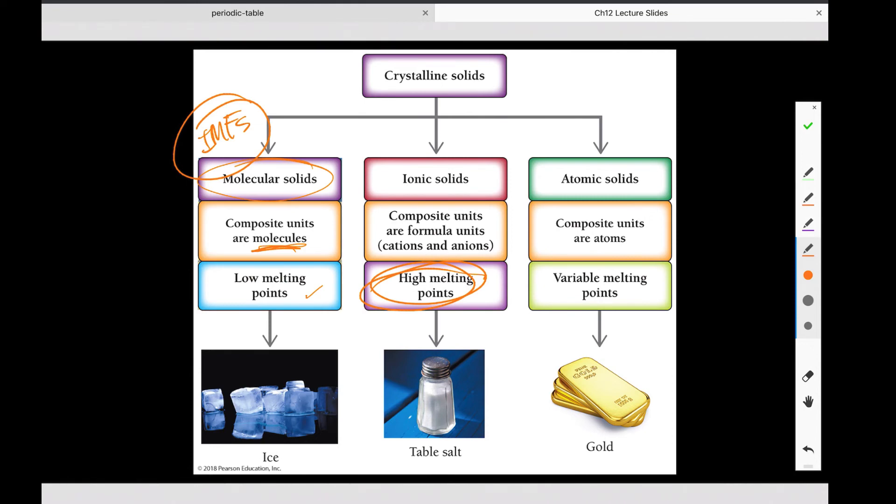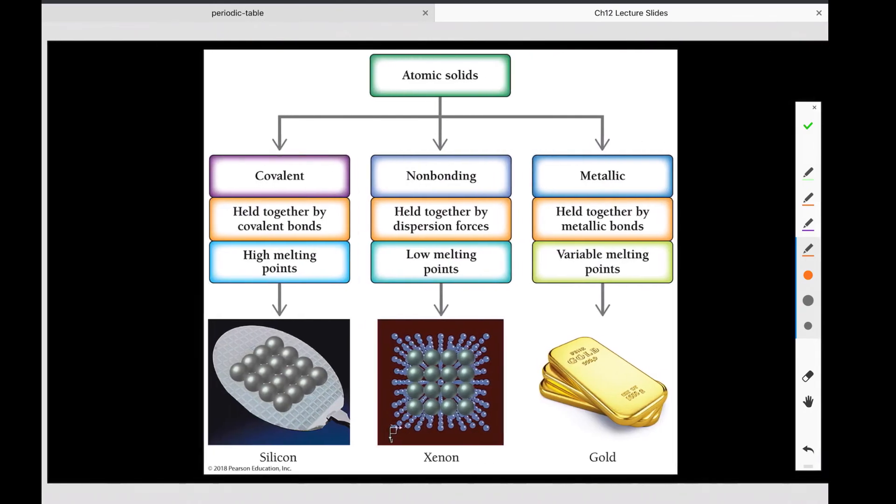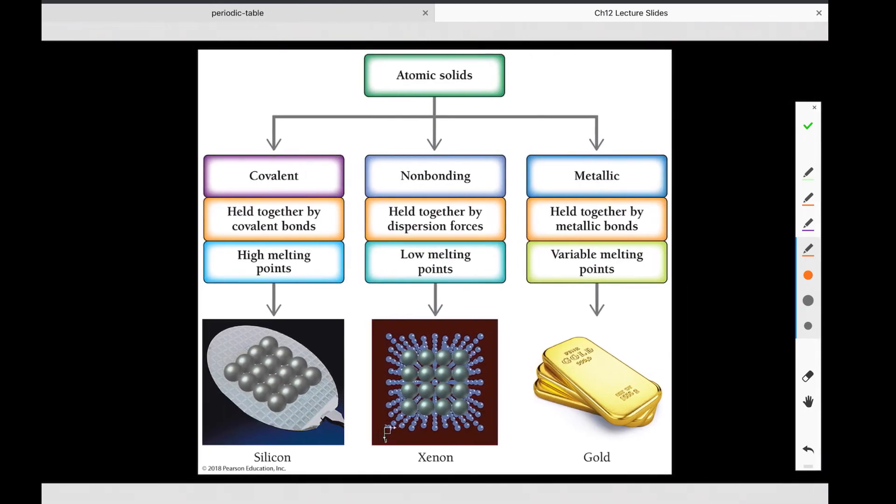Then we have our atomic solids, which are made up of atoms, clearly. And their melting points vary a lot, which means that the force of attraction between atoms varies a lot depending on its properties, which then brings us to here, where we can have our metallic solids, which are held together by metallic bonds, which your book sort of talks about being a sea of electrons, where our electrons are delocalized. What does that mean?